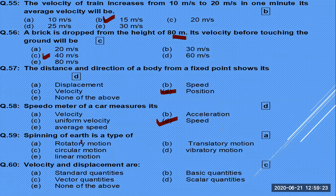Spinning of a top is a type of rotatory motion. It is not circular, not linear, not translatory — it is rotatory motion, where the body moves about a fixed axis.